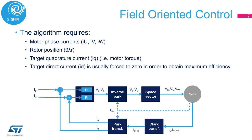The field-oriented control algorithm requires some data. We need three phase currents; the third one can be obtained as the negative of the sum of the other two. The currents are usually sensed using shunt resistors connected to the low-side MOSFET of each half-bridge of the power stage. We need to know the position of the rotor magnetic field. The easiest way is to measure it using Hall effect sensors, resolvers, or encoders. However, it is also possible to use a sensorless algorithm that reconstructs the position starting from the voltages and currents of the motor phases — flux estimators. The next parameter is the target quadrature current, which is proportional to the torque through the motor torque constant, KT.